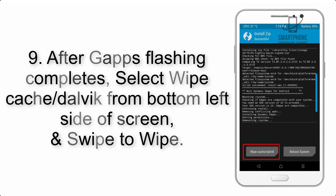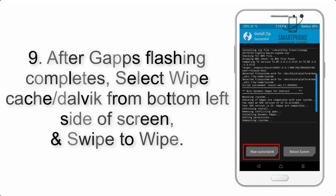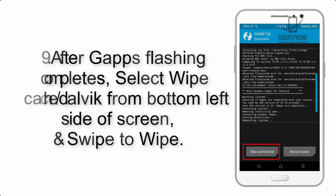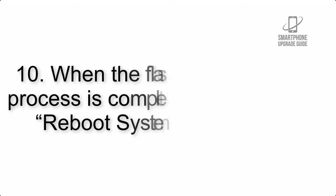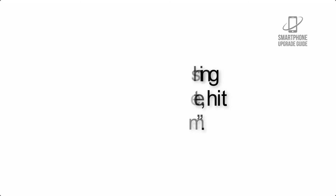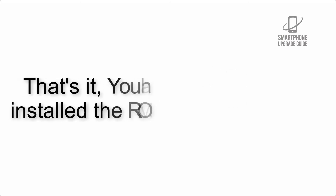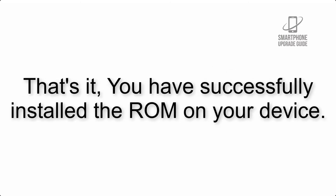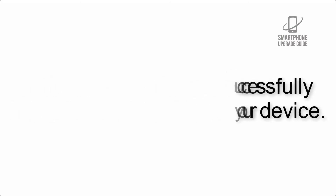Step 8: Flash the gapps zip package in the same manner. Step 9: After gapps flashing completes, select Wipe Cache and Dalvik from the bottom left side of the screen and swipe to wipe. Step 10: When the flashing process is complete, hit Reboot System. That's it — you have successfully installed the ROM on your device.